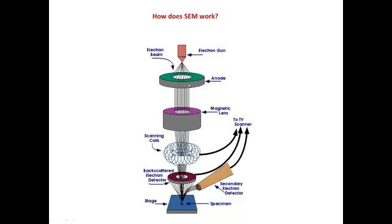The function of the anode is to converge the electron beam and prevent its scattering. The electron beam carries a negative charge whereas the anode carries a positive charge, so the anode traps the electron beams and avoids unnecessary scattering. The beam then falls on the condenser lenses, which move it forward and onto the specimen or the scanning coils, from which it falls on the electron detectors.